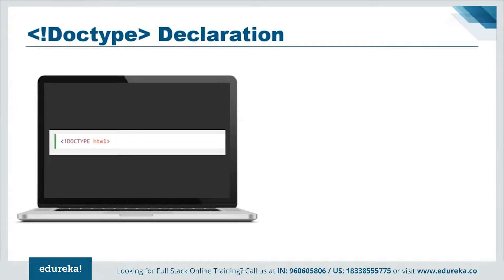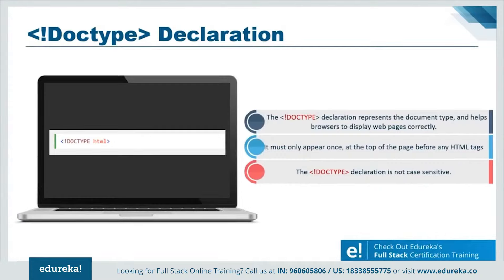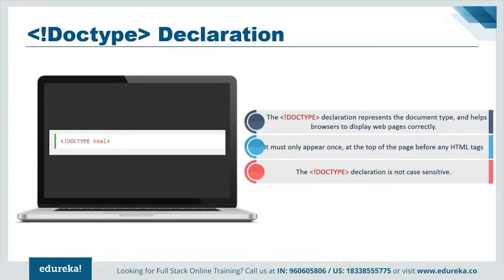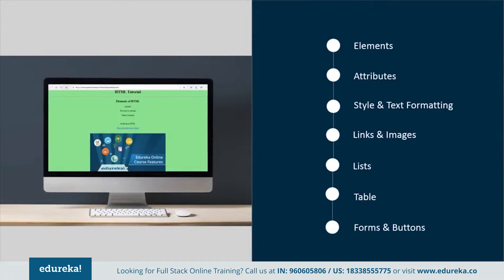An important element is the DOCTYPE declaration, which represents that the file is a document type and helps the browser display web pages correctly. It appears once at the top, before any HTML tag, and is not case sensitive. A web page is fundamentally made up of three constituents: HTML gives the structure, CSS is responsible for styling — colors, backgrounds, image layout — and JavaScript makes the page dynamic, handling button clicks and form submissions. Now let's create some elements and see how they look. HTML provides headings H1 through H6, with H1 being the biggest and H6 the smallest.